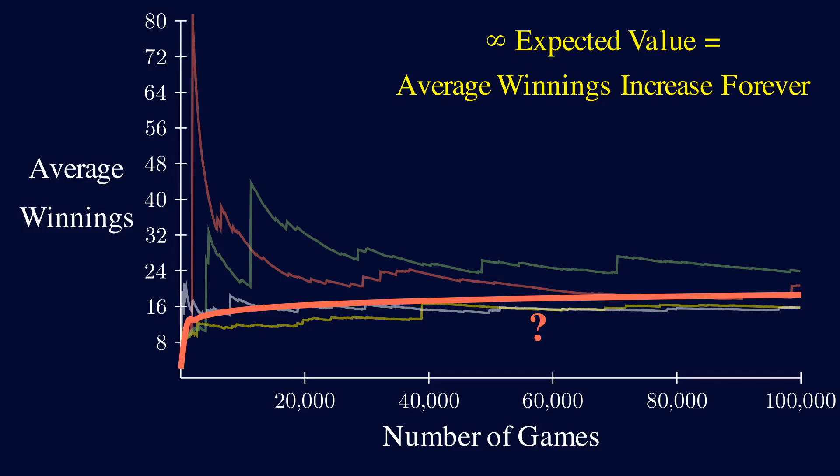For example, if the function can estimate that when we play 65,000 times, we'll win about $18 on average, then paying $30 to play this game seems really high.